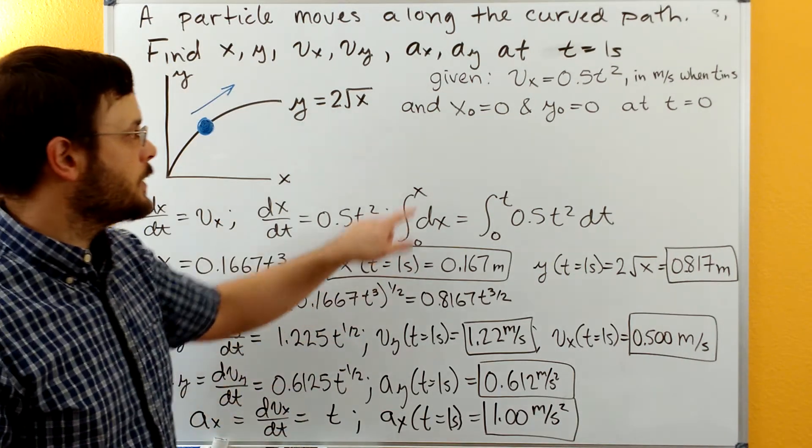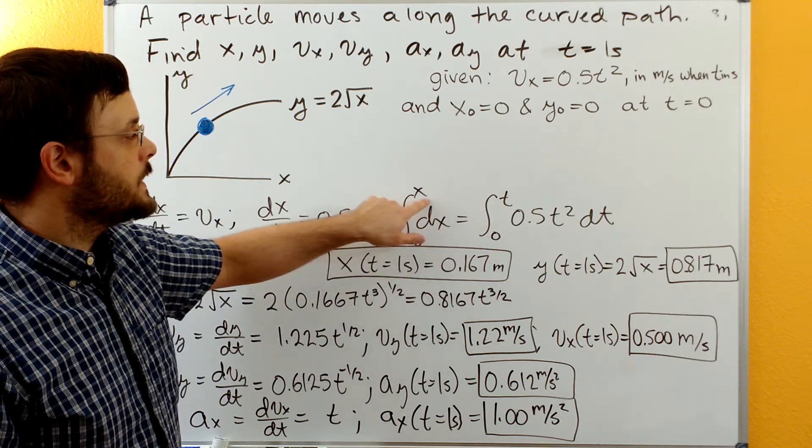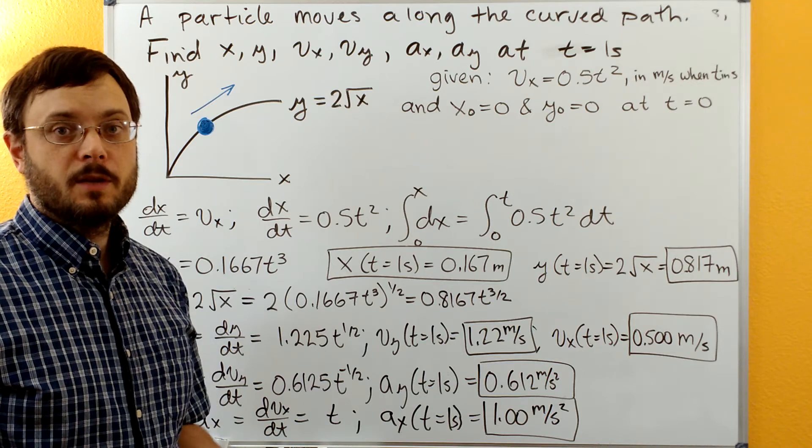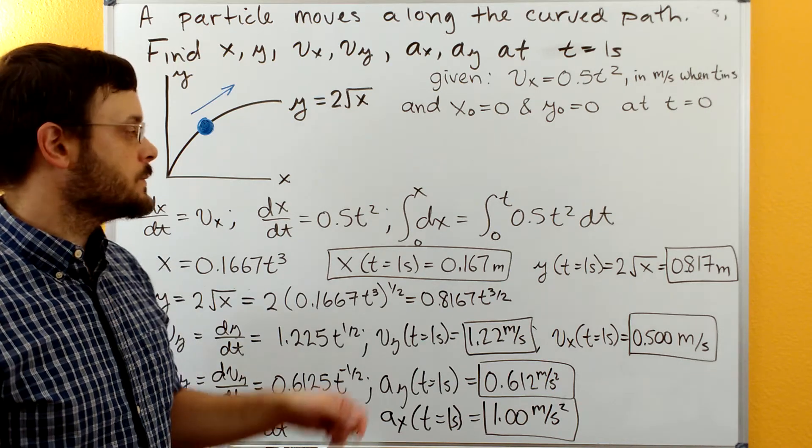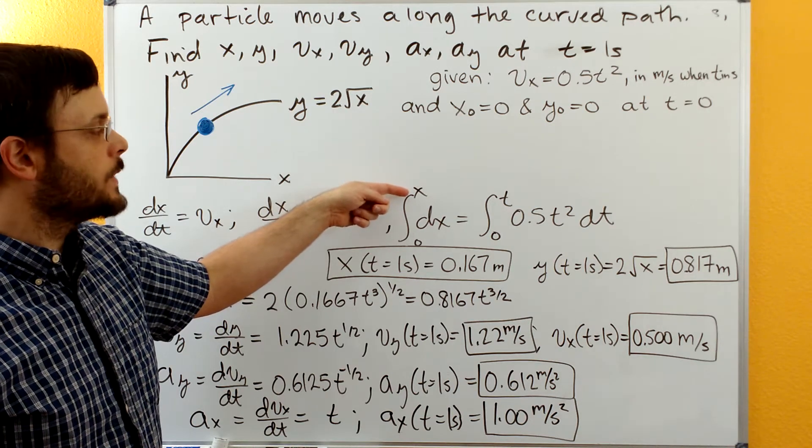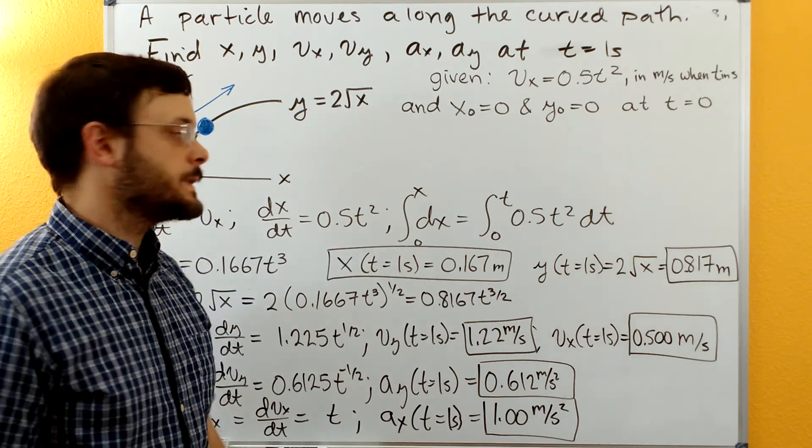This is going to go from x equals zero when t equals zero, up to x equals x and t equals t. We want to maintain a function after we integrate, so we don't want to run this up to any particular numerical value. We want it to run up to a variable here, and we want this to run up to the variable t.